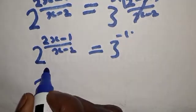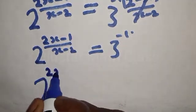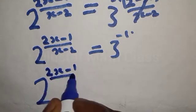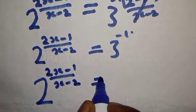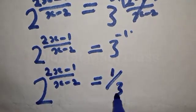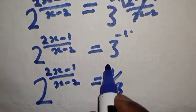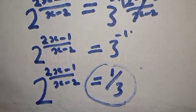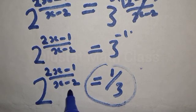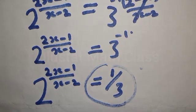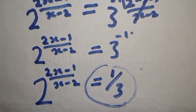The result is 1 over 3. So this is our answer: 2 raised to power (2x minus 1) over (x minus 2) is equal to 1 over 3. Please don't forget to like, share, comment, and subscribe. Thank you.